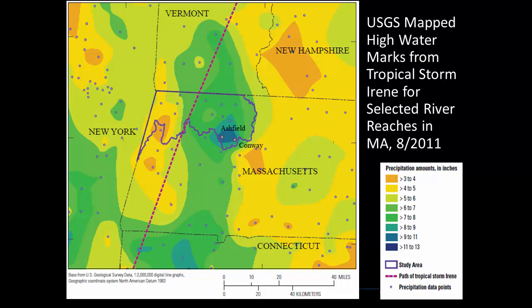In western Massachusetts, the U.S. Geological Survey found that 8 of 16 long-term stream gauges set new peaks of record on August 28 or 29 in 2011. The preliminary estimate of damages to roads and bridges in Massachusetts alone was calculated by FEMA to be in excess of $25 million.